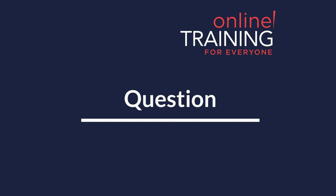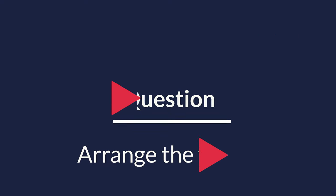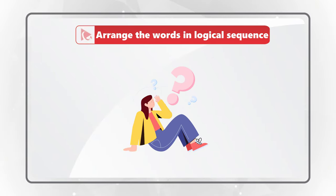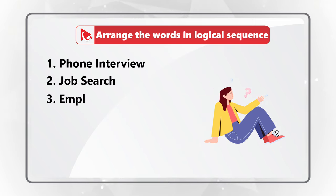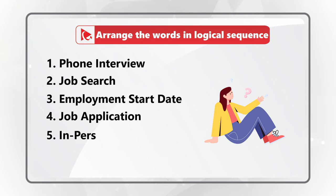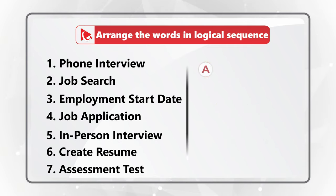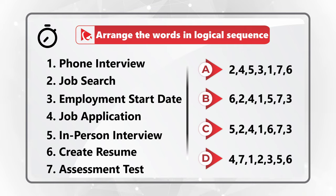Here's an amazing question which tests your analytical skills, logical reasoning skills, as well as your knowledge of the employment process. You need to arrange the words into a logical sequence. The words are: phone interview, job search, employment start date, job application, in-person interview, create resume, and assessment test. You have four different choices: A, B, C, and D. Take a close look, maybe pause this video to see if you can come up with the answer.